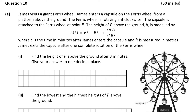Hello and welcome to the video. This is Matthew and we're going to look at question 10, which is a 50 mark question on trigonometry, functions, and a small bit on the circle as well. Part of the question tells us that James visits a giant Ferris wheel. He enters a capsule from a platform above the ground. The wheel rotates anti-clockwise and the capsule is attached at point P. The height of P above the ground, H, is modeled by H(T) = 65 minus 55 cos(πT/15), where T is time in minutes and H is in meters.